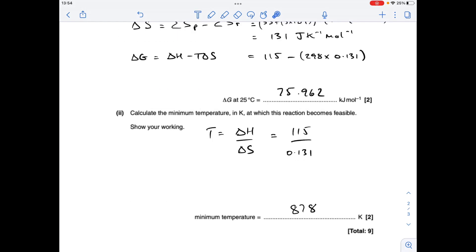And finally, we've got to find the temperature at which the reaction becomes feasible. So that's the temperature that makes delta G equal to zero. So the Gibbs equation rearranges to that, feeding in the values, keeping it in Kelvin, so 878 is the answer.